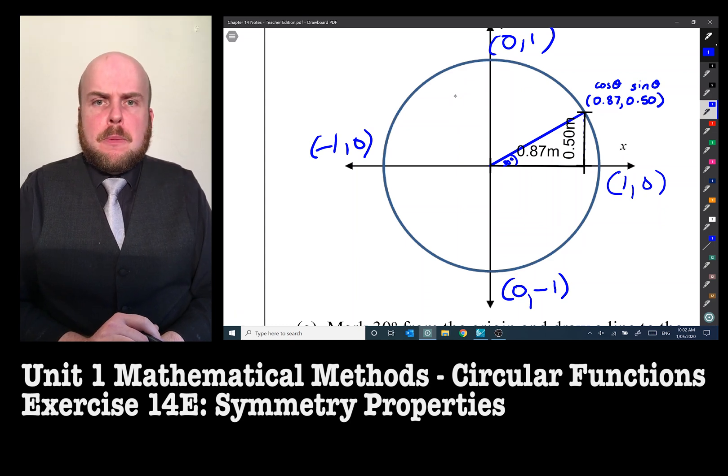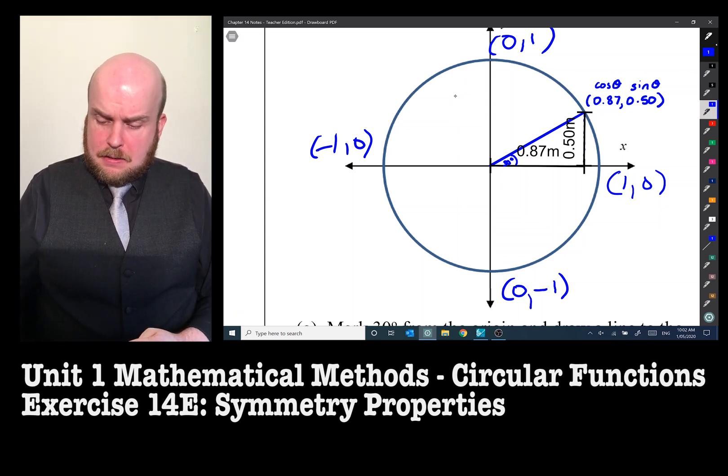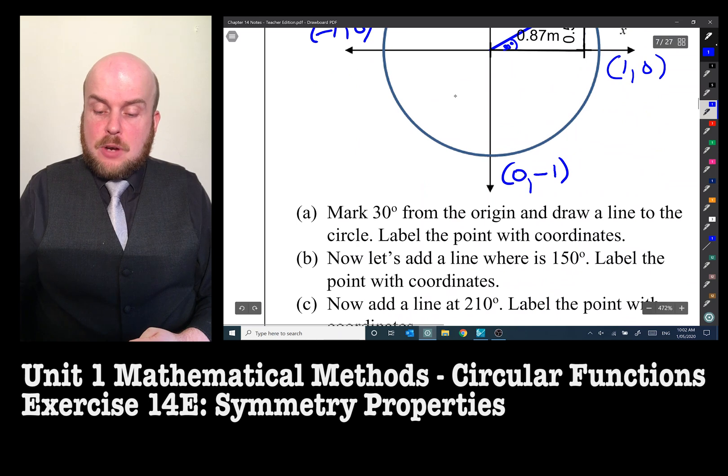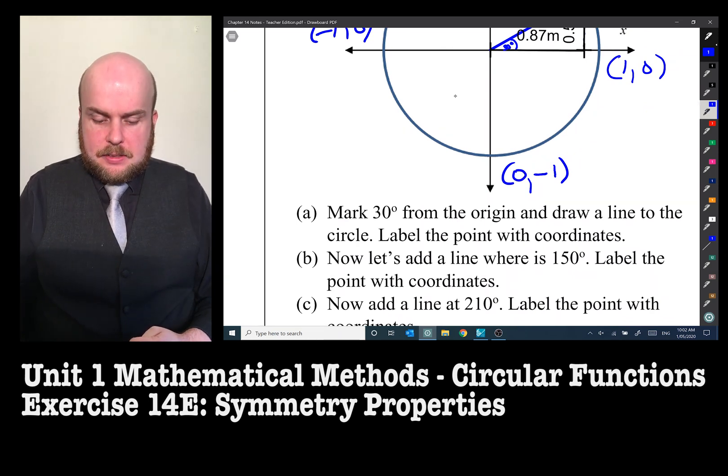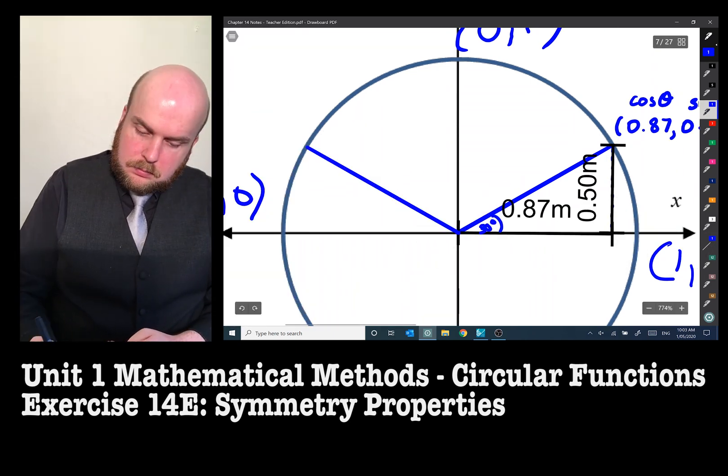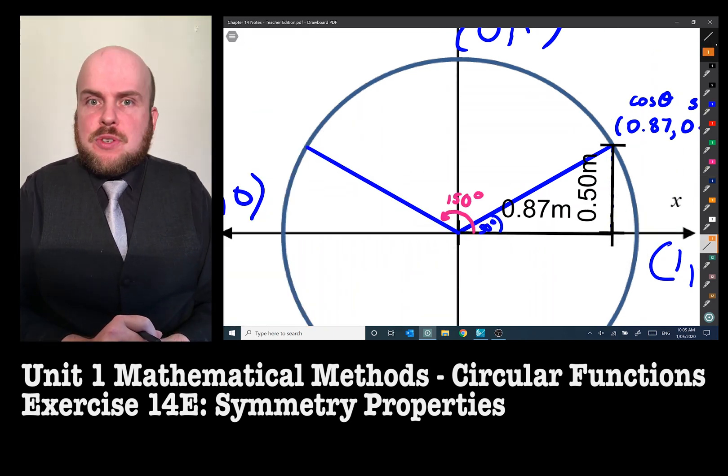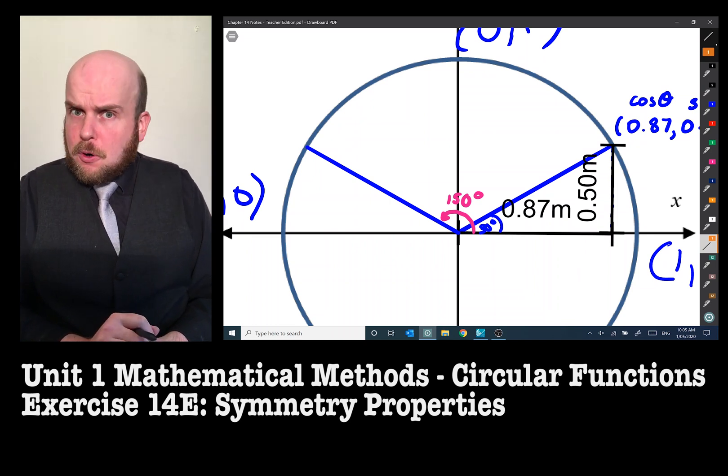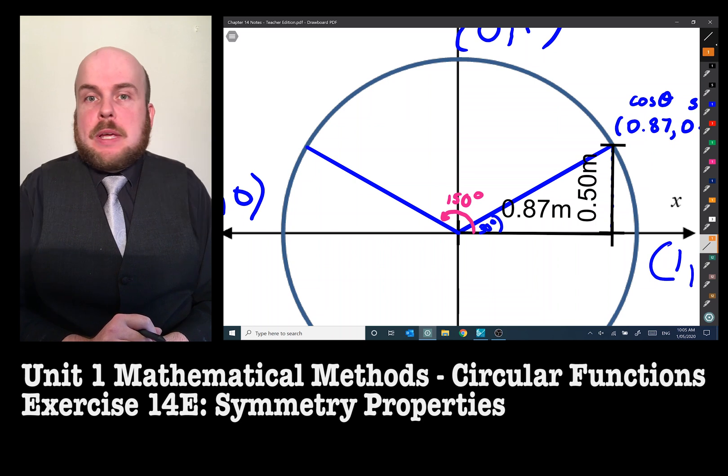So now what we're going to do is we're going to add a line where it's 150 degrees and label the point with coordinates. We've drawn a line at 150 degrees, but we cannot use trigonometry as we did before to find the points because we cannot make a right angle triangle.